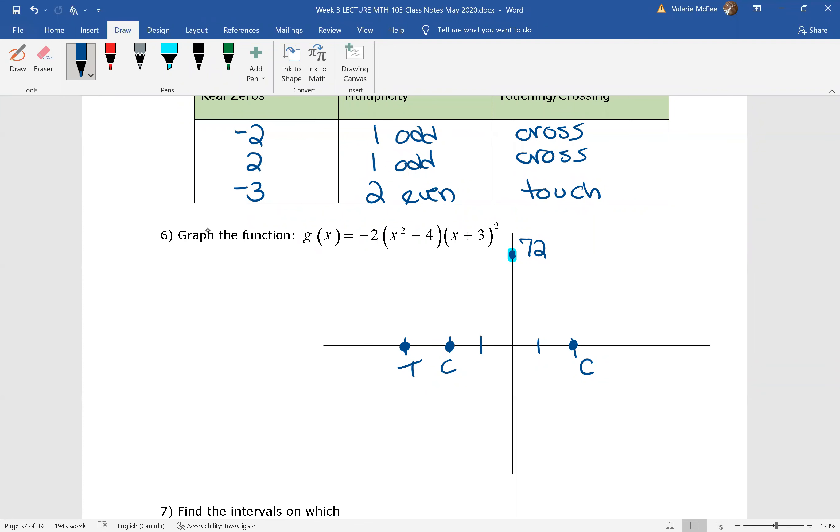Again, I marked the touching and crossing for my real zeros. We said that both ends are falling, so from the outside real zeros it's falling. Touching here, crossing, going to hit that y-intercept, and then crossing again. Did your graph work out?